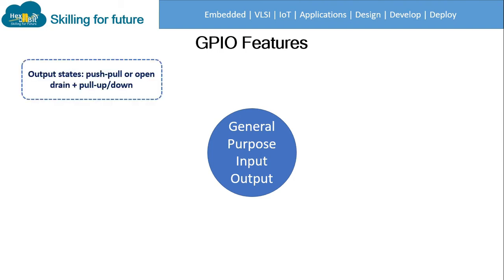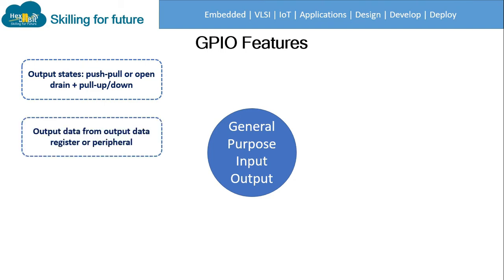The very first feature is output state. We have two output states: push-pull or open drain, with pull-up pull-down configuration. Push-pull means we can push the pin to high logic or pull the pin to low logic, whereas open drain is only accessible for high logic. The next feature is output data from the output data register or peripheral — we can send data output using the register as well as peripheral.